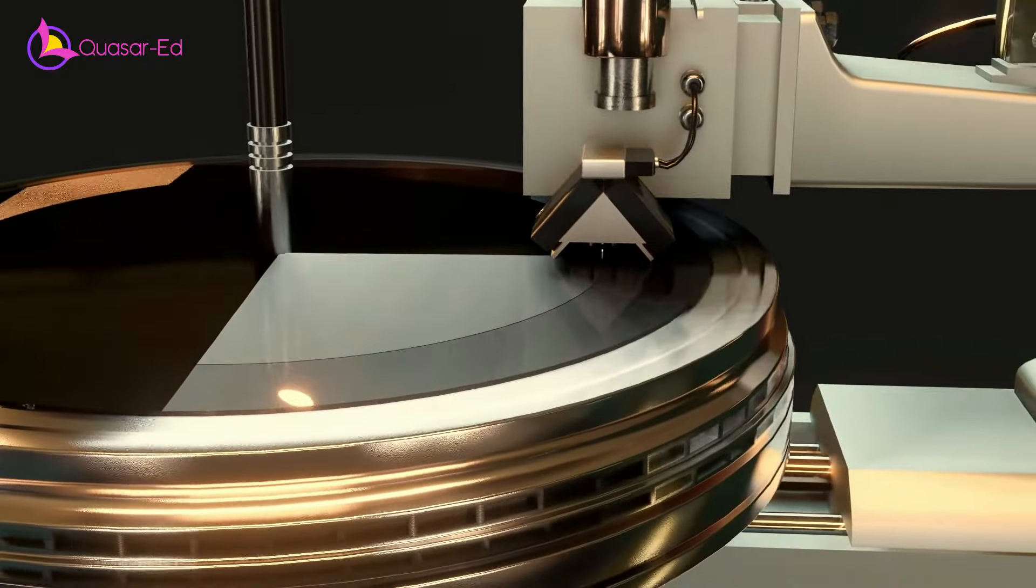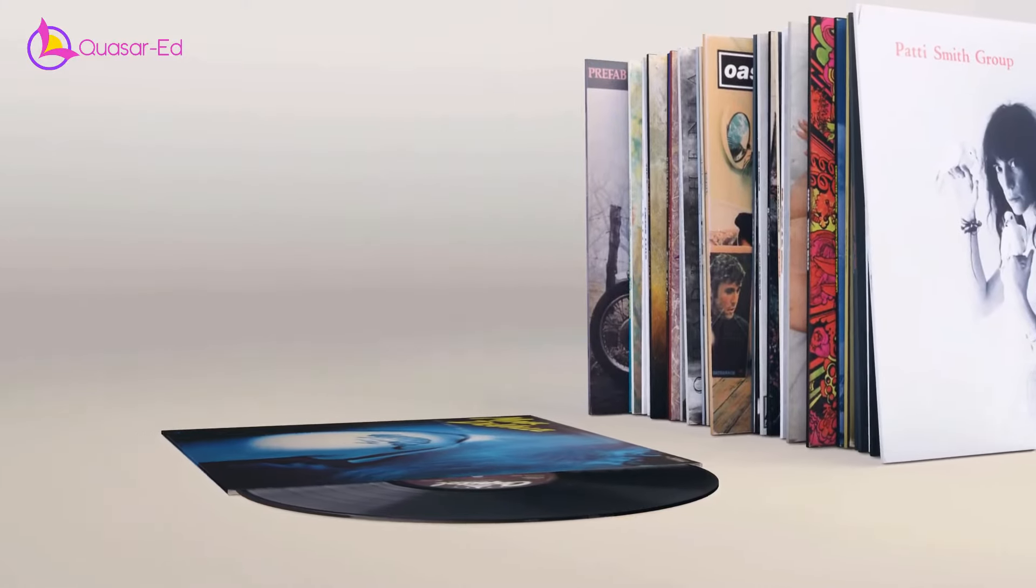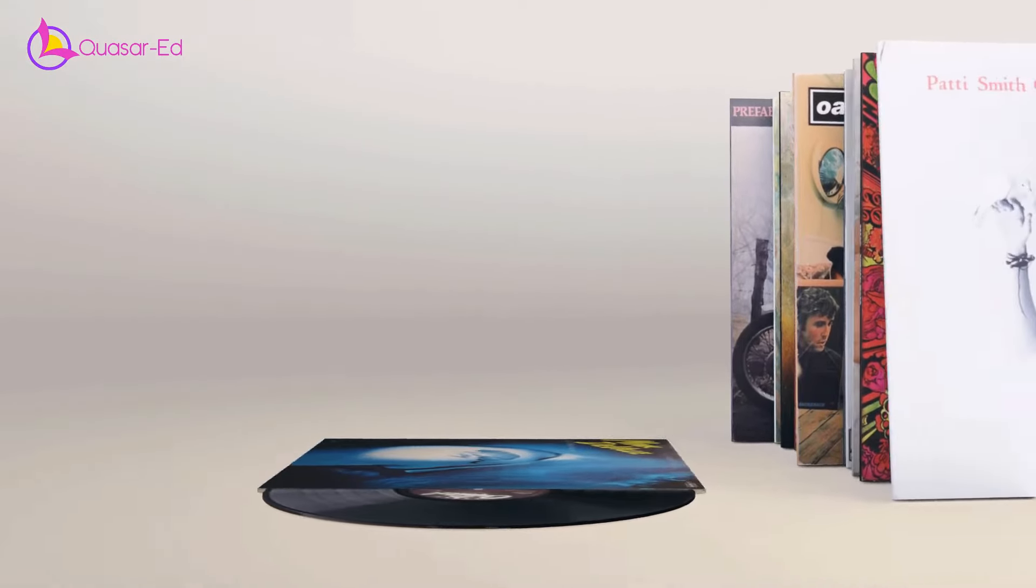Since we now understand how sounds are recorded onto a disc, let's move on to how gramophones can produce back the sounds recorded in a vinyl record.